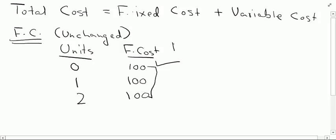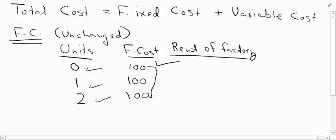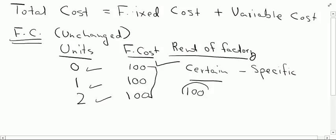An example of fixed cost is the rent of certain premises or rent of a factory. A company has to pay a fixed amount of rent for carrying out its operations, and that does not depend upon the number of units being produced. We have to pay a certain fixed amount for a specific period of time — say 100 rupees of rent irrespective of whether we produce 0, 1, 2 units or more.